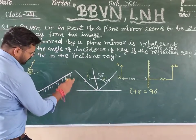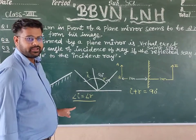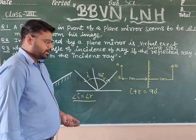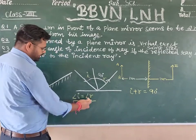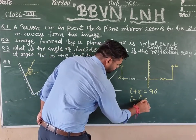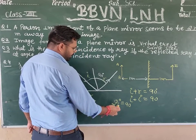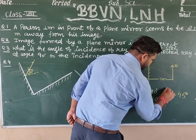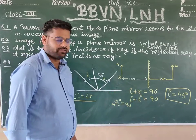Now, from the law of reflection, angle i equals angle r always. So wherever reflection occurs, the angle of incidence equals the angle of reflection. To find the angle of incidence, we substitute r with i in the equation: i plus i equals 90 degrees, so 2i equals 90 degrees, giving us i equals 45 degrees.